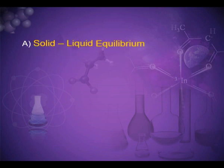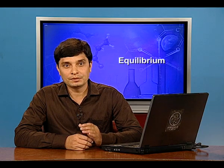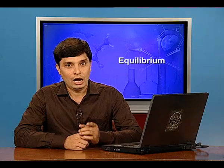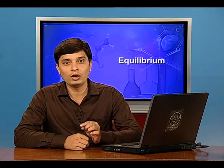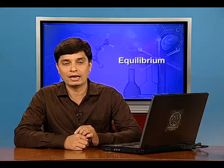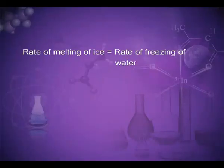The first physical equilibrium is solid-liquid equilibrium. If ice cubes along with water at 0°C (273 K) and normal atmospheric pressure are placed in a thermal flask so that no heat can enter or leave the system, the mass of ice and water remains constant. The two opposing processes occurring at equilibrium are melting of ice and freezing of water, and at equilibrium the rate of melting of ice equals the rate of freezing of water.